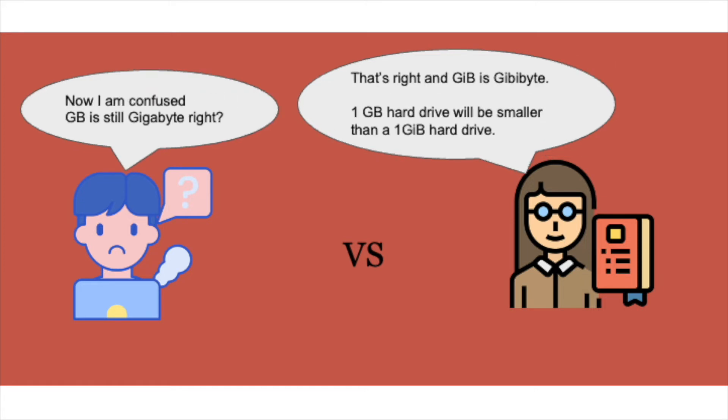The amateur goes, well now I am confused. GB is still gigabyte, right? The expert goes, well yes that's right, however GiB is gibibyte, and a 1 GB hard drive will be smaller than a 1 GiB hard drive because there's a lot more space in the gibibyte hard drive version, which is based on base 2 and is a binary prefix because it operates to 2 to the power of something rather than 10 to the power of something.